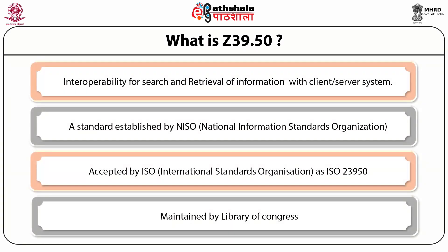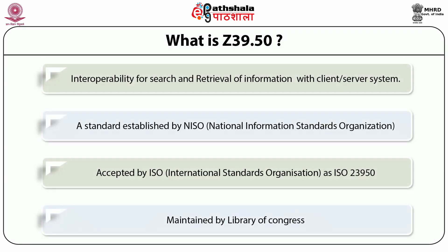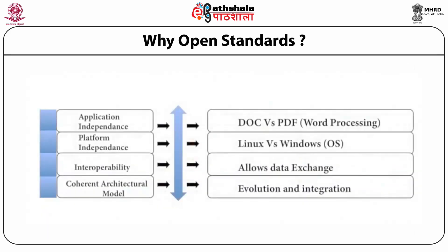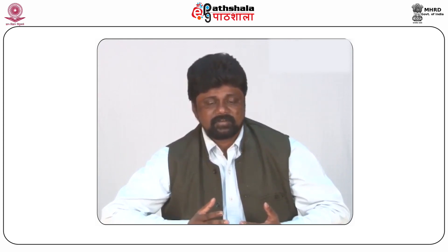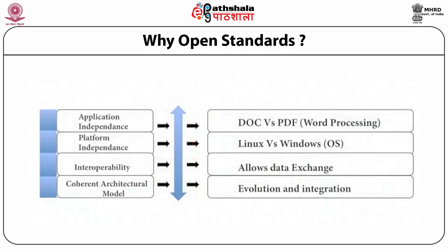The other protocol used for search and retrieval of information is Z39.50. This protocol provides interoperability for search and retrieval of information. It is a standard established by the National Information Standards Organization, later accepted by ISO who gave it the number 23950. But we use the name Z39.50, taking the last four digits with a dot. This standard is maintained by the Library of Congress. These two protocols are extensively used in libraries for interoperability across platforms with client-server systems.